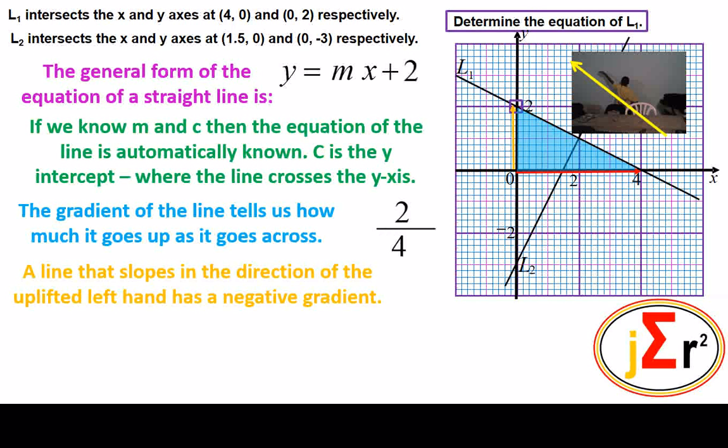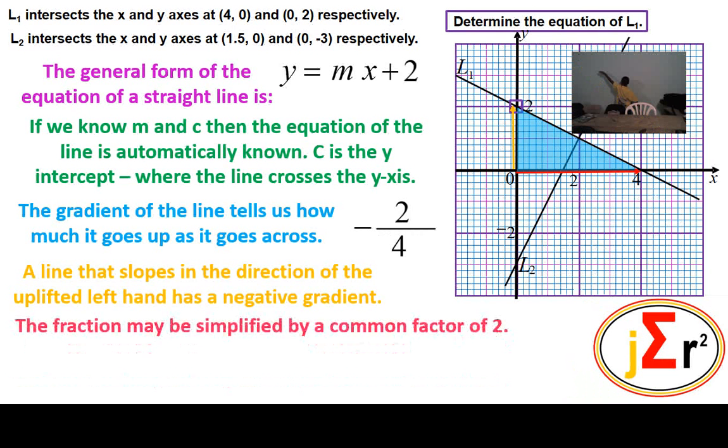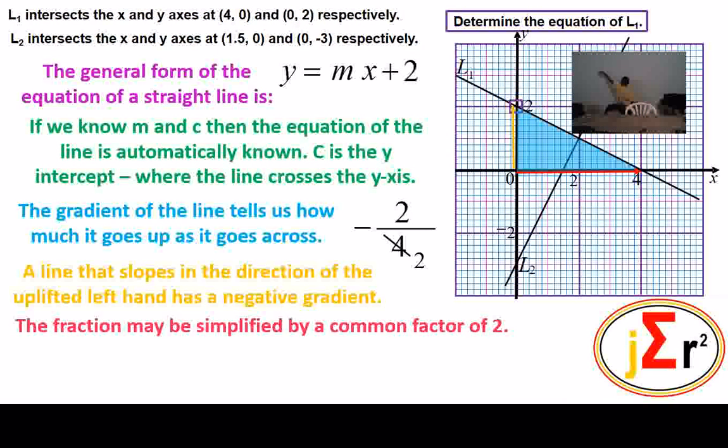Therefore, our gradient is negative. The fraction may be simplified by a common factor of 2. 2 into 4 is 2 and 2 into 2 is 1. Therefore, the gradient in its simplest form is negative one-half.